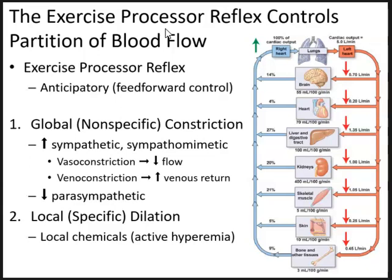The exercise pressor reflex is an anticipatory reflex — basically a feed-forward control which anticipates what happens when we exercise. Partition control means directing blood flow to areas of the body that will need it, especially during exercise.